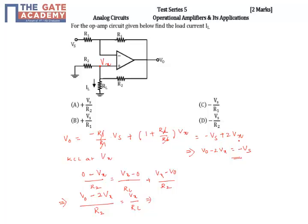So substitute that. This will become minus Vs by R2 is equal to Vx by RL. You see what is the load current? Load current is nothing but Vx by RL.